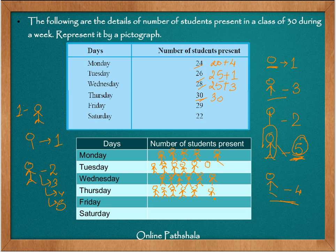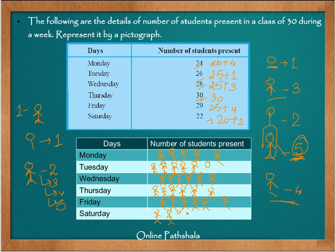On Friday, 29 students were present — that is 25 plus 4 — so 5 complete objects and a partial representing 4. On Saturday, it was 22 — that is 20 plus 2 — so 4 complete objects and a partial representing 2.